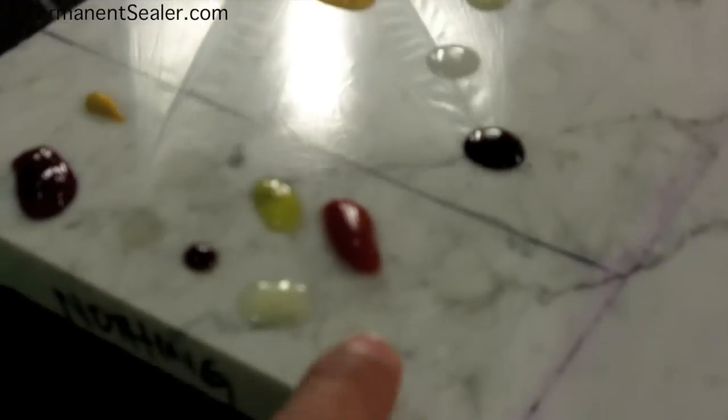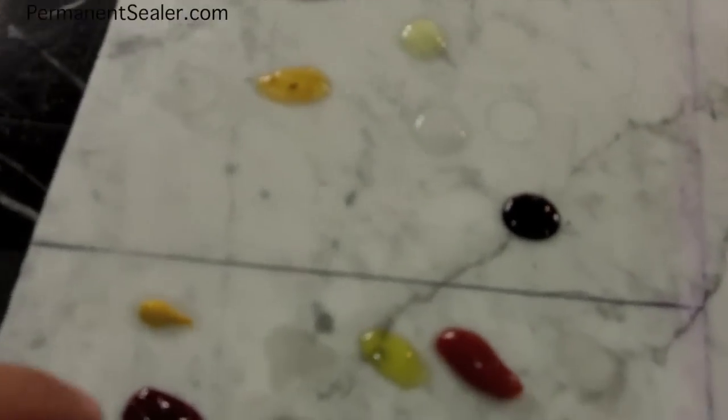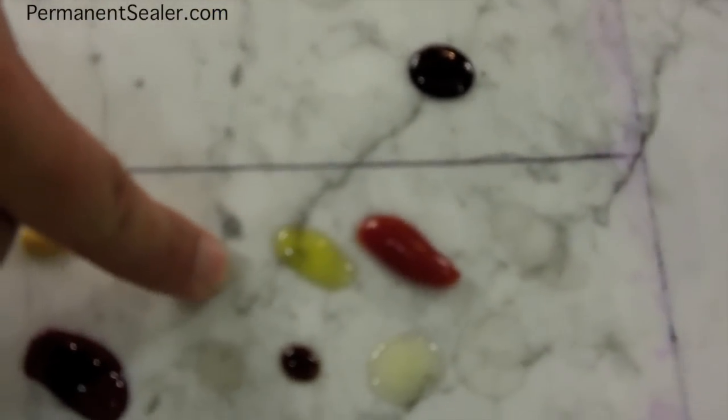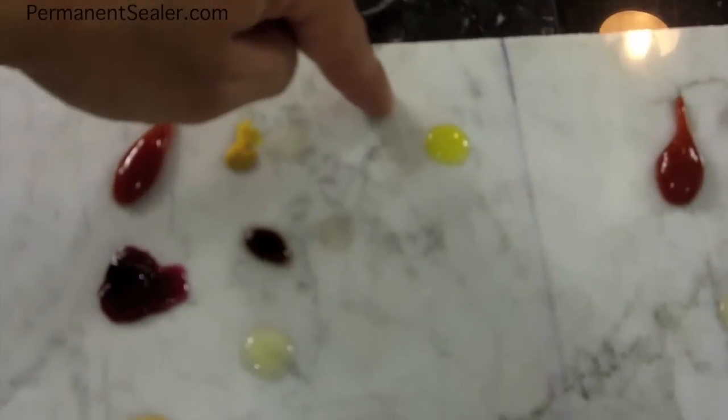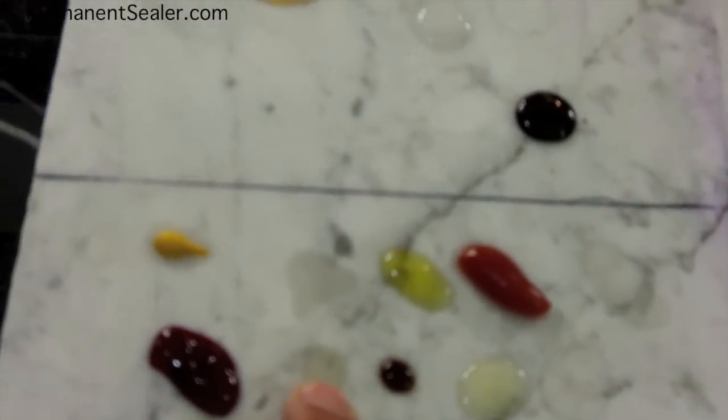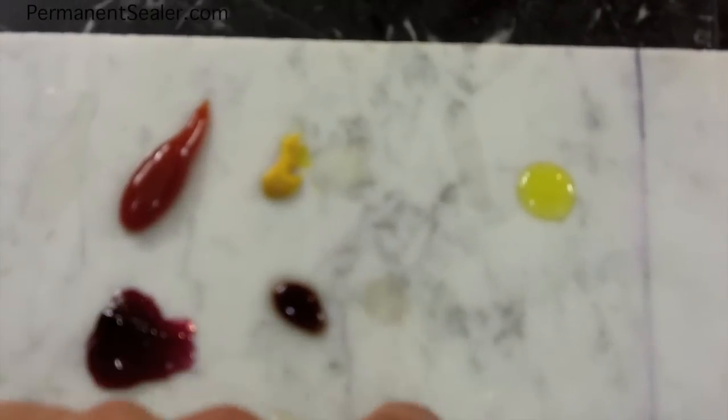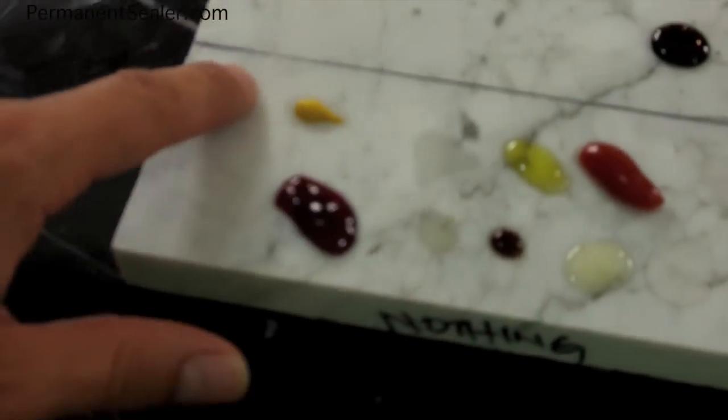So again, down here where there was no protection at all, you have the olive oil—pretty bad stain right there, just as bad as the 20-year sealer almost. Then you have the soy sauce over here as well. Also seems like it left a stain and an etch.